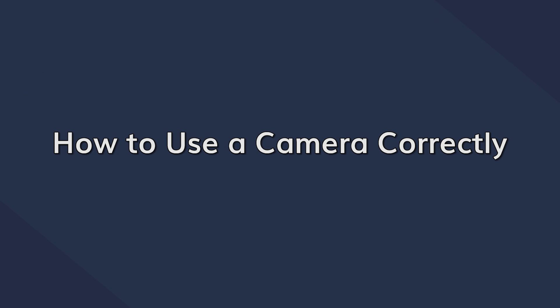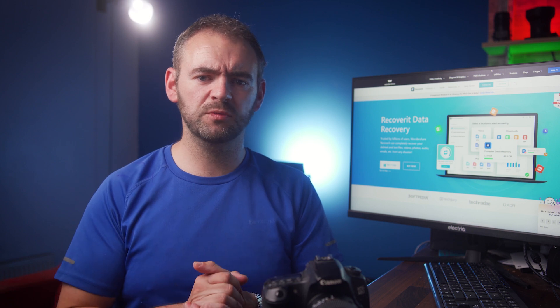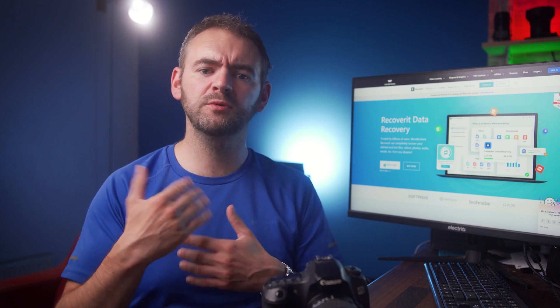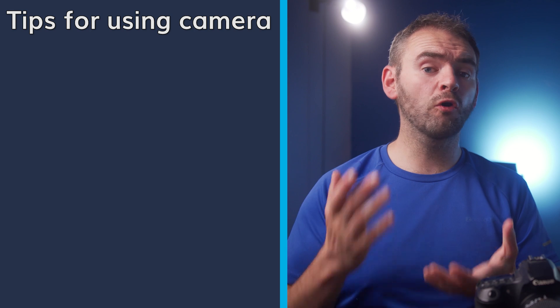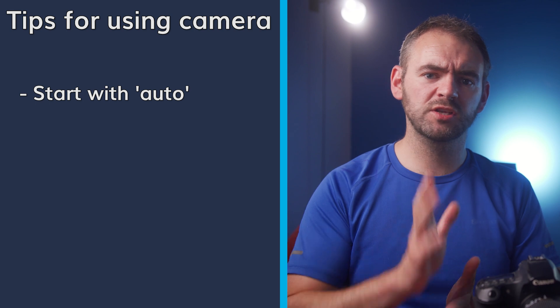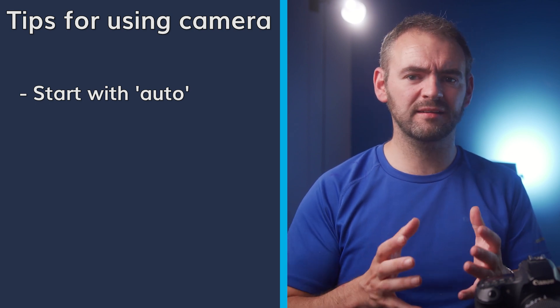So that is the basics of how a digital camera works. But before we conclude this video, let's quickly take a look at some basic tips that will help you use your camera in the right way. If you're an absolute beginner and you've purchased a camera for the very first time, the automatic mode can be a very ideal companion for you. If you set the camera to automatic, it will automatically configure the various settings to try and produce the best picture for you.